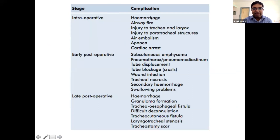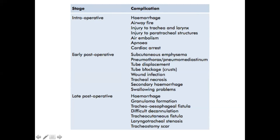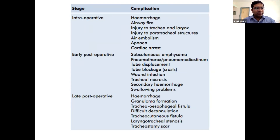Other early complications include haemorrhage, airway fire, injury to trachea or larynx, paratracheal placement, air embolism, and apnoea. Apnoea can occur because in CO2-retaining patients the respiratory drive depends on CO2; tracheostomy results in CO2 washout, which can trigger apnoea and cardiac arrest — be ready with CPR. Always obtain a chest X-ray after tracheostomy to check for subcutaneous emphysema, pneumothorax, and pneumomediastinum.